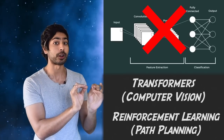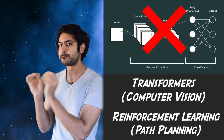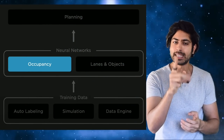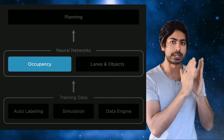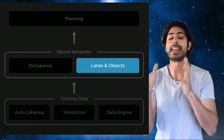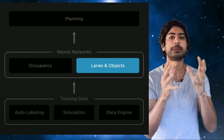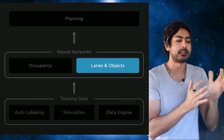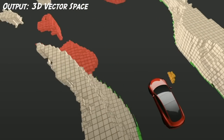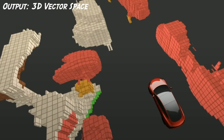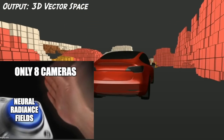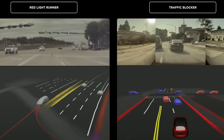They instead use transformer networks to see the world and reinforcement learning to drive in it. Specifically, Tesla uses two vision transformer networks to see and one to drive. An occupancy network predicts whether or not a point in 3D space is occupied or not, and an object detection network predicts what that occupied object is, be it a lane, dog, or pedestrian. Together, the predictions from these networks produce a 3D vector space that shows the directions of all objects, using a technique called neural radiance fields. From this, the path planning network decides how to drive.